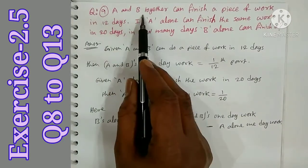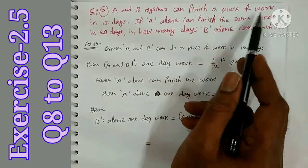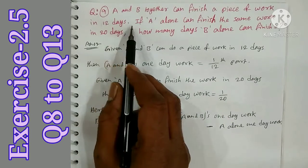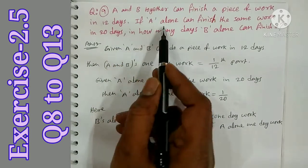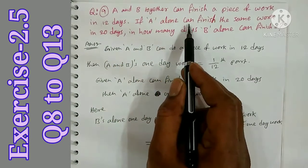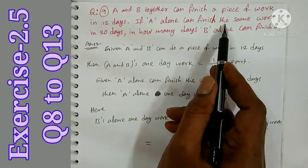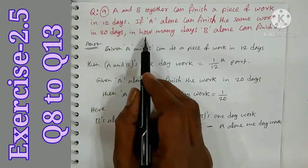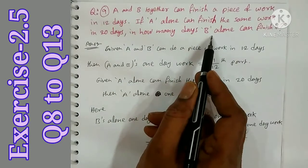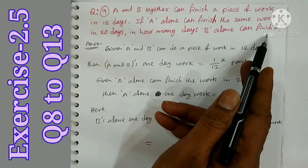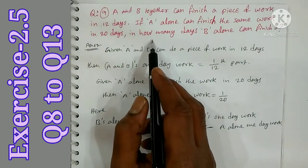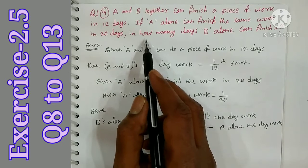A and B together can finish a piece of work in 12 days. If A alone can finish the same work in 20 days, in how many days can B alone finish it? This is a very important question.